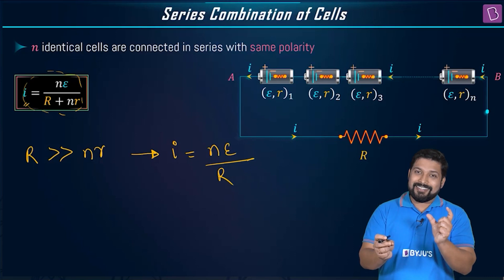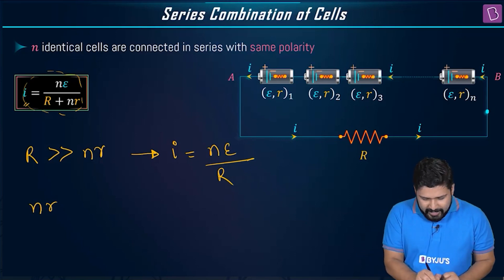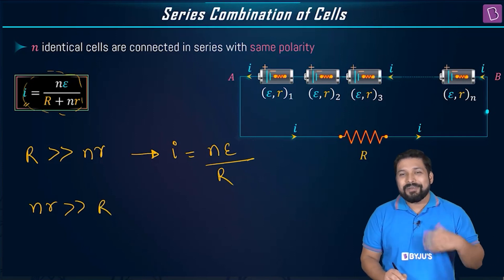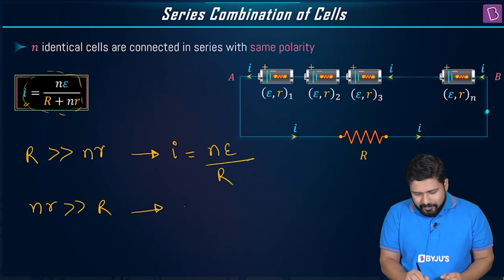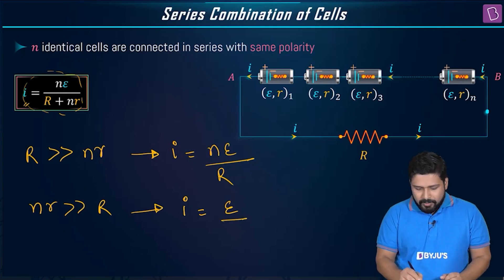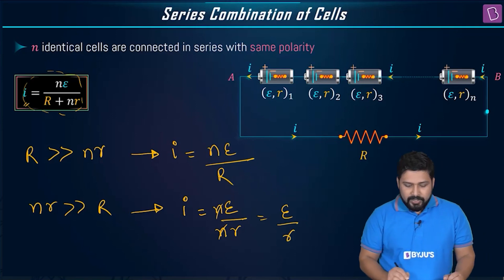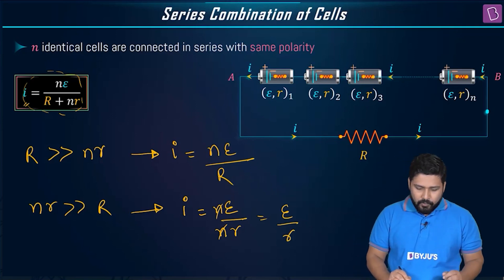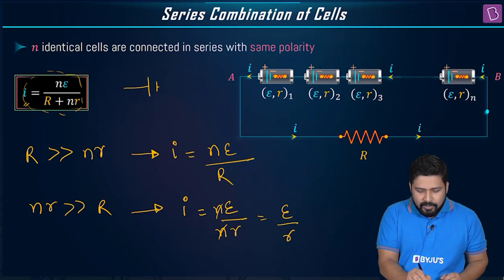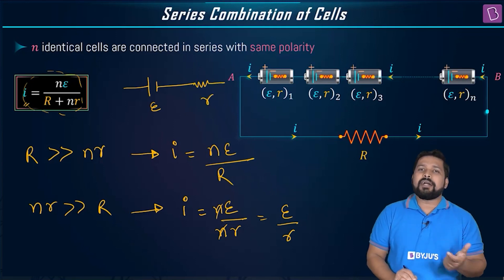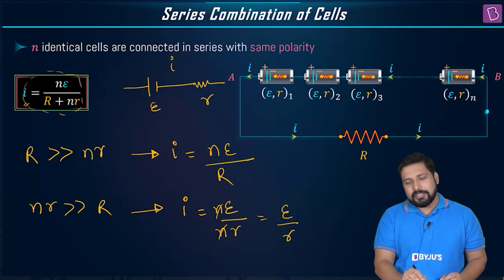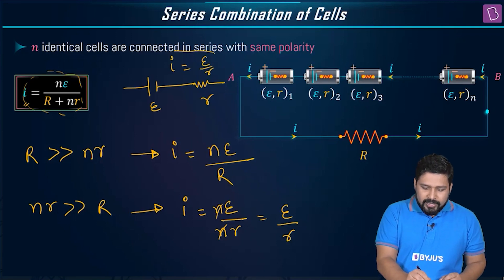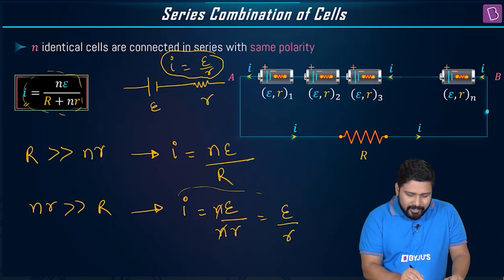Taking it the other way: if nr is much much greater than R — which happens in most practical cases, like in vehicles — then R can be neglected. The current becomes I = nE / nr = E / r. This is the same current you would get from a single cell with EMF e and internal resistance r.